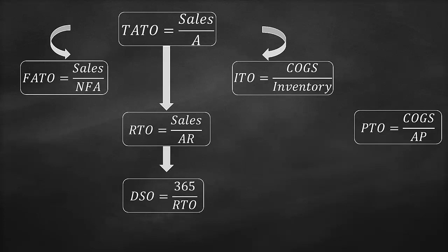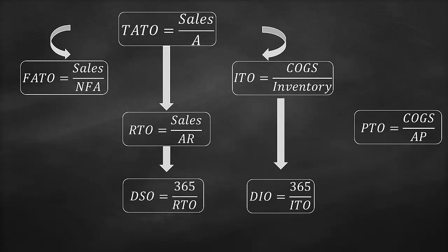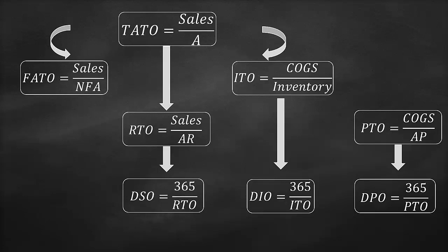The inventory turnover ratio could be expressed as the days inventory outstanding ratio, which is 365 divided by the inventory turnover. And the payables turnover ratio could be expressed as the days payable outstanding ratio, which is 365 divided by payables turnover.